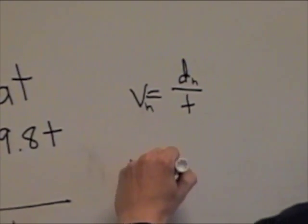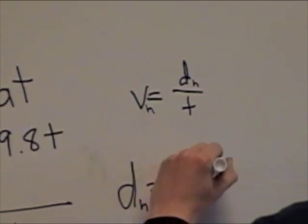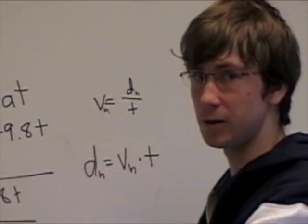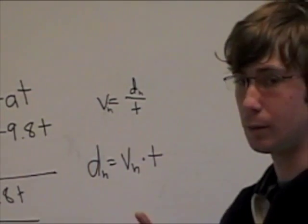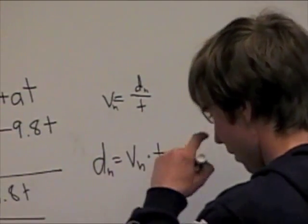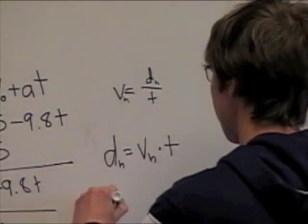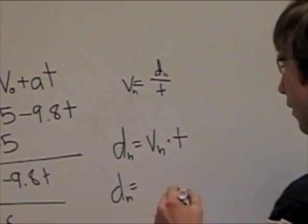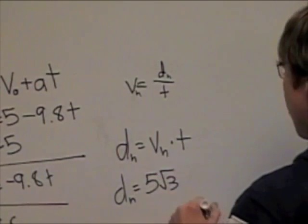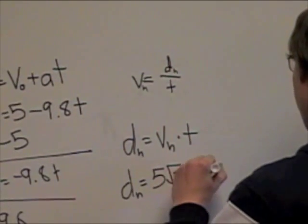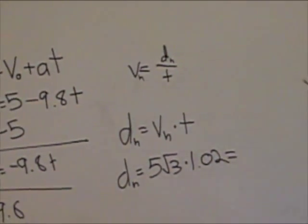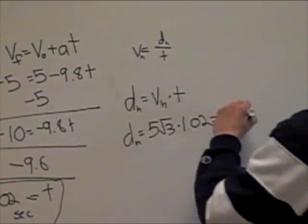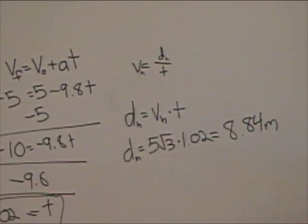Distance horizontal is equal to velocity horizontal times time. Now time will be the same for both the horizontal and vertical components of the velocity because it's one ball. So it's going to have one time in the entire way, despite the fact that we broke up the vectors. So the distance will be the horizontal velocity of 5 root 3 times the time of 1.02, which is equal to 8.84 meters.